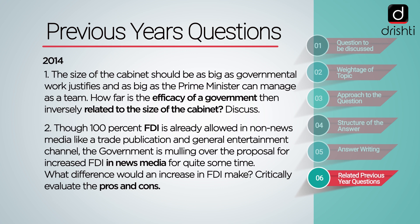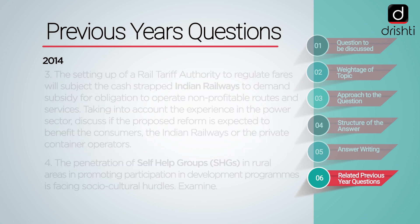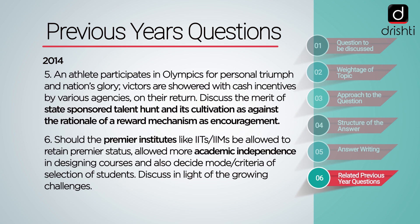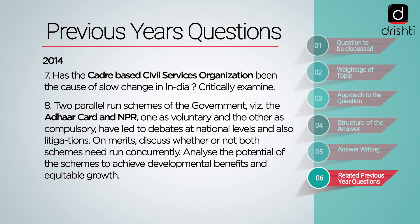In 2014, eight questions were asked from this segment — the relation between the efficacy of the government and the size of the cabinet, FDI and news media and its pros and cons, proposed reforms in the Indian railways, self-help groups, and the state-sponsored talent hunt and its cultivation as against the rationale of a reward system for encouragement in sportspersons. The other three questions were related to academic independence in premier education institutions, CADA-based civil services organization, as well as Aadhaar and NPR.